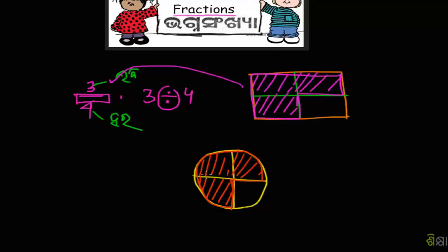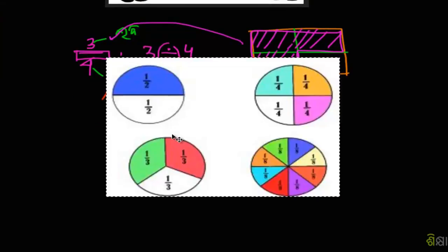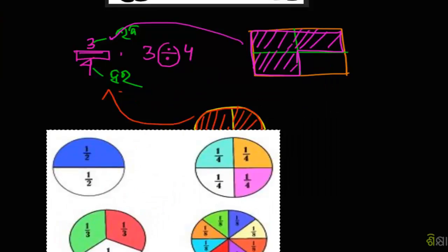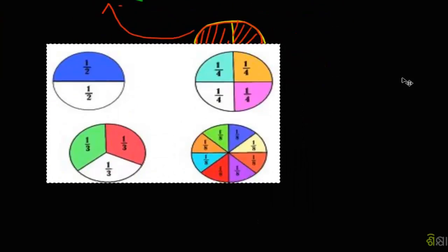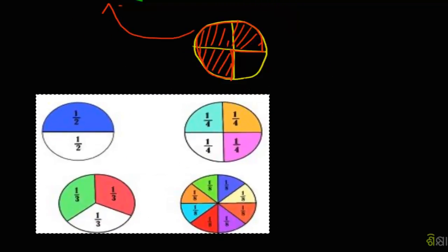I will write the fraction 3 by 4. So, we will read the fraction. If you were 2, you would write the fraction. Please write the fraction — straight, you would write the fraction. You would write the fraction, and that is it.